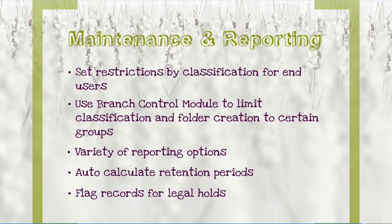There are many ways to maintain control over your classification and various types of reports to run. By default, only the records admin account has access to editing a classification scheme — to all others, it is read-only. Users can also be further restricted in their viewing and filing based on any number of parameters, including classification. The advanced architecture of the software also permits several branches or institutions to share a single system. This branch control module gives local autonomy over subsets of records for some functions, and global control over the entire system for centralized management functions.